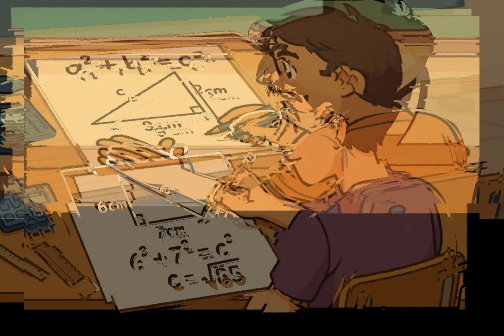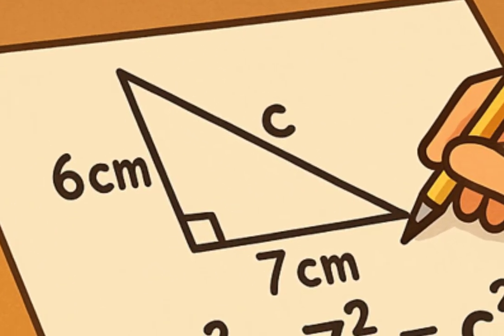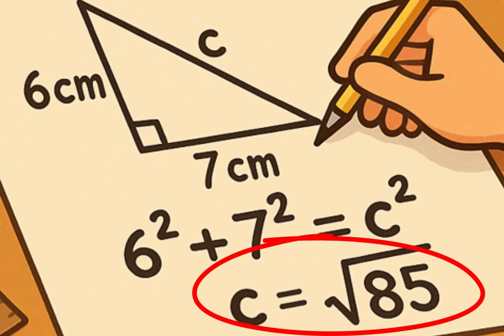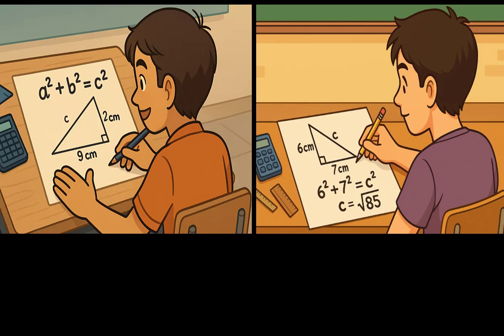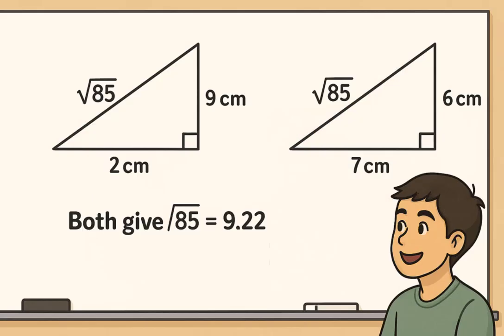For option B, if the legs are six and seven, then the hypotenuse is the square root of six squared plus seven squared. That is square root of 36 plus 49, which also equals square root of 85. So far, it looks like both triangles have the same hypotenuse, square root of 85, which is approximately 9.22.